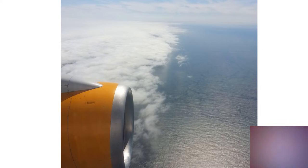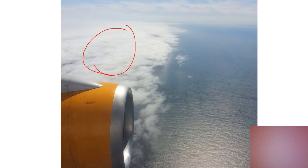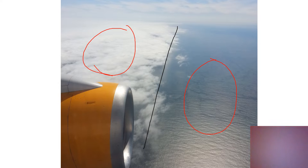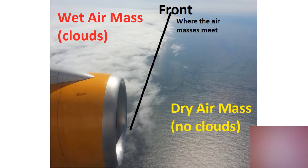First of all, what a front is. A front is where two different air masses meet. You can see that one chunk of air is different from another. This line right here where they meet is what's called a front. You can see the front very dramatically between the dry air mass and the wet air mass — and where those two air masses meet, that's where all the action is.